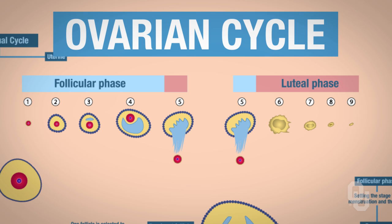It's followed by the luteal phase, so the luteal phase occurs last. So you have the two phases of the ovarian cycle — the follicular and the luteal phase.